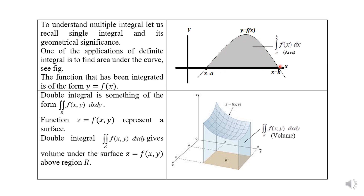This is a well-known fact. When you perform a single integration, you integrate from point a to point b — from one point to another point — and you get an area. Now let's come back to double integration.